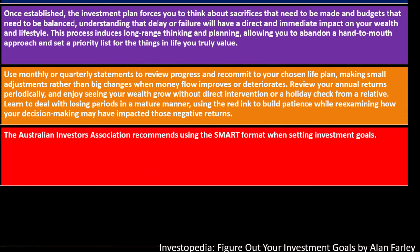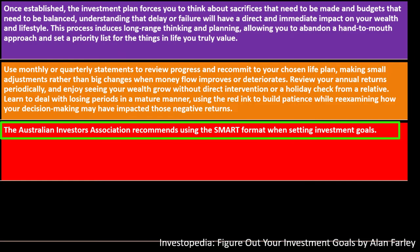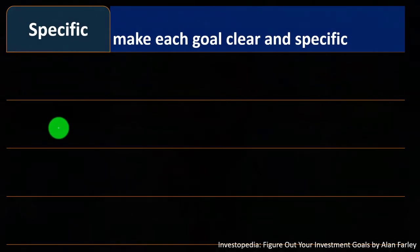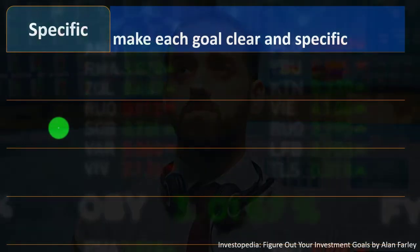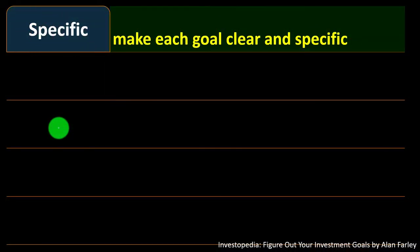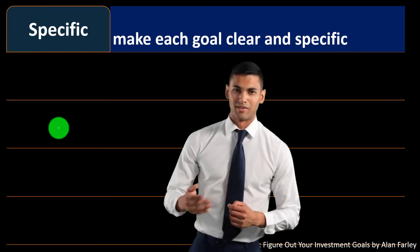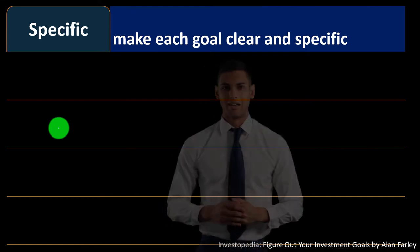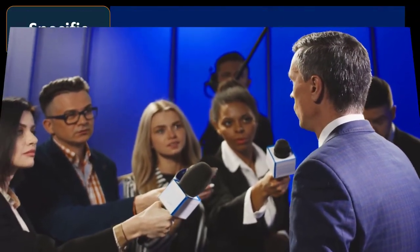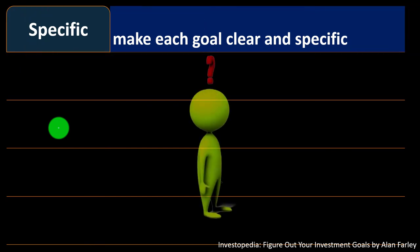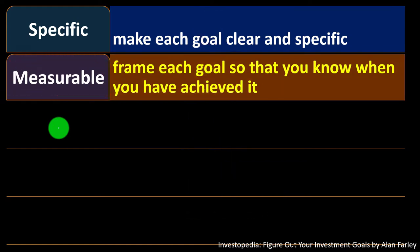The Australian Investor Association recommends using the SMART format when setting investment goals. The first element is Specific — make each goal clear and specific. This applies to goal-setting in general: we often use vague language. It's like asking a politician what they'll do and they say 'we're going to make life better for you' — that's not specific. Similarly, saying 'I want to live well in retirement' isn't specific enough.